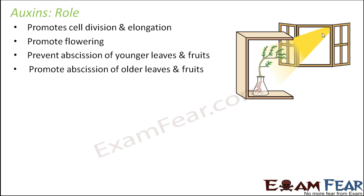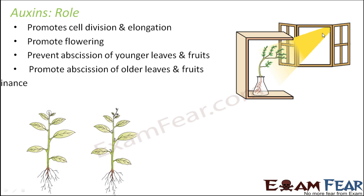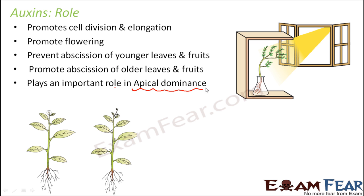At the same time, auxin promotes abscission of older leaves and fruits. If the leaves are old and no more capable of doing their job correctly, it is better that they get shed off. So auxin promotes the abscission of older leaves but prevents the abscission of younger leaves. It also plays a very important role in apical dominance. Apical is related to the term apex — let us understand what apical dominance is.